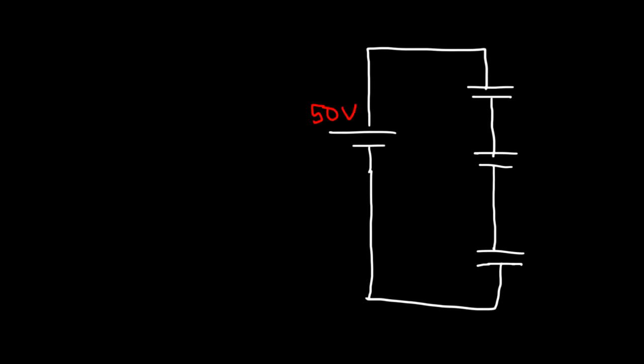Now, what if we have a capacitor circuit in series? Let's use three capacitors instead of two. So on the left, we have a battery. You can see the two different sides of the battery. And let's say the battery's voltage is 50 volts. Let's call this capacitor C1, C2, and C3.